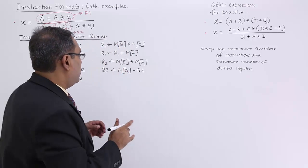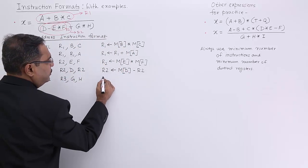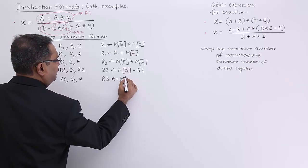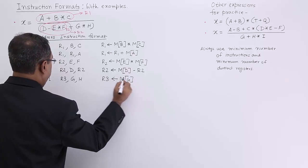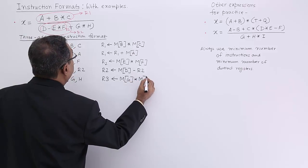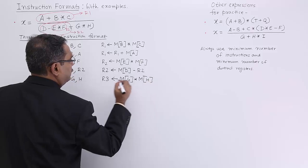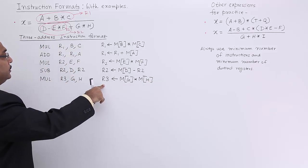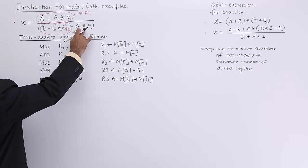I cannot use R2 because R2 is holding some partial data or partial result. Now R3 will be initialized with memory content for the variable G and it is multiplication, memory content for the variable H. That will be dumped onto R3.